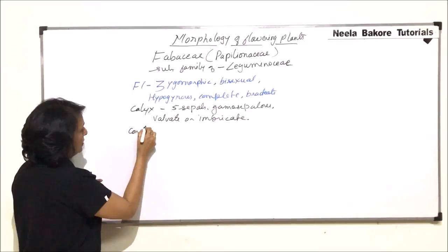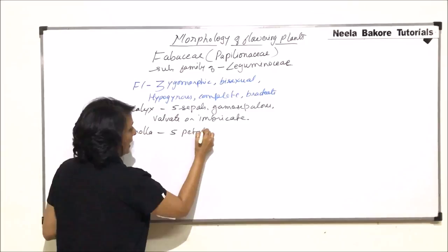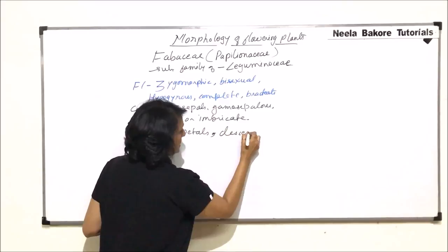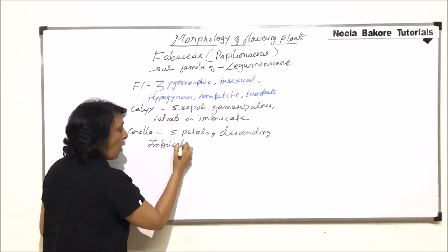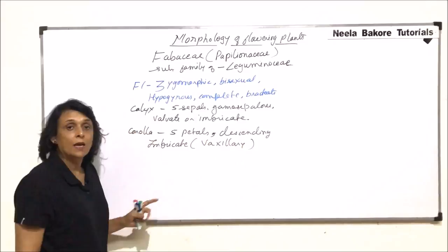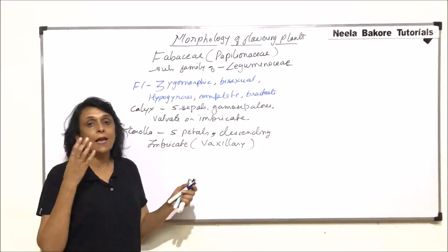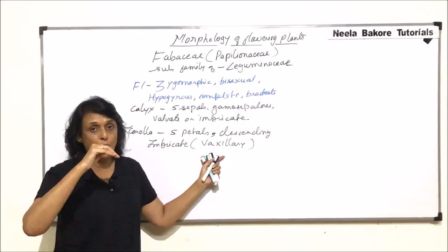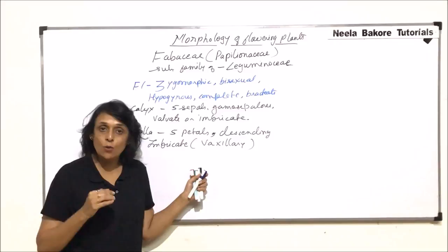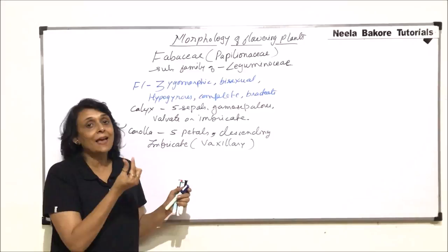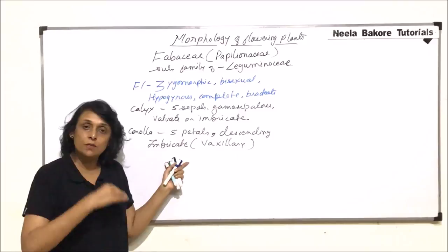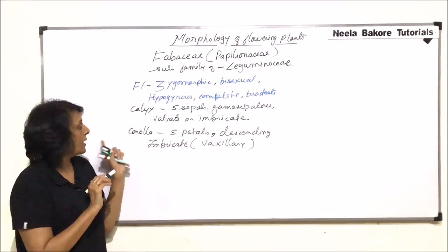Whereas when we are using the word imbricate, that means there is one sepal which is going to be out, one sepal completely in and three are going to be in and out. Corolla, there are five petals. And the aestivation is descending imbricate or it is written as vexillary aestivation. As soon as we write vexillary or descending imbricate we already have the idea how the arrangement is.